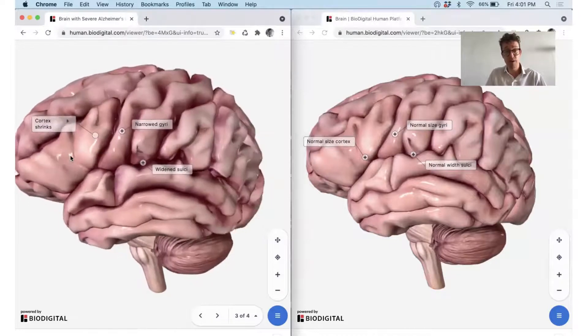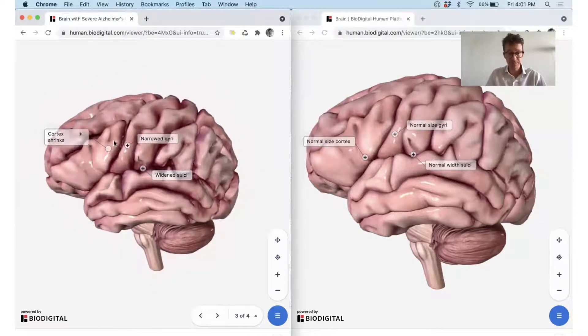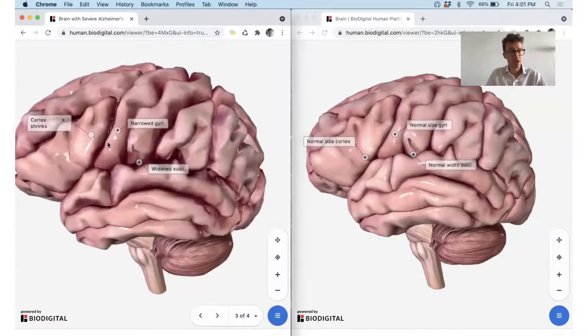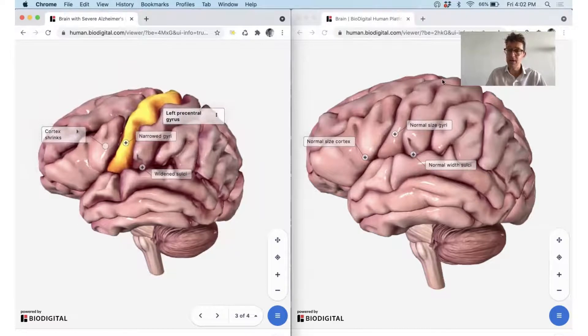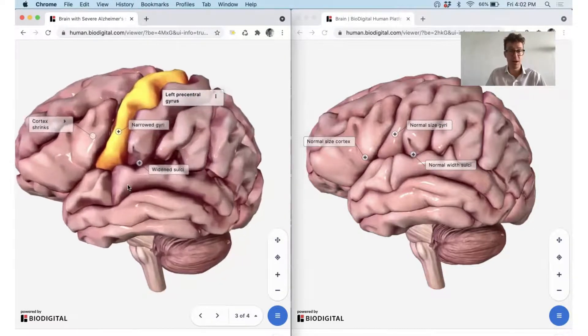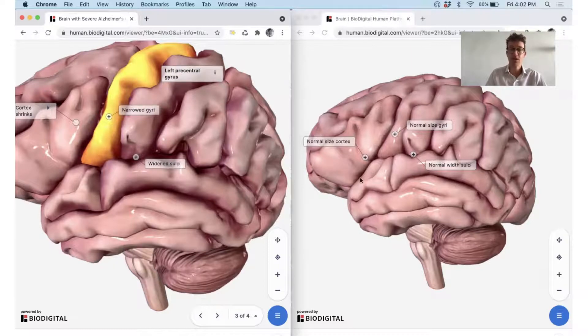So this cortex, it shrinks. The brain can actually become up to one-third of the size of a regular-sized brain, so it's actually smaller. And if you look closely, you'll see that the gyri, so this is a gyrus right here that I'm going to select, they actually become narrower than these thicker gyri of a regular brain. As well as the sulci, here, they get wider, because the gaps in between these smaller gyri are bigger. So those are the things that you want to look out for, and this is what you would find on autopsy.